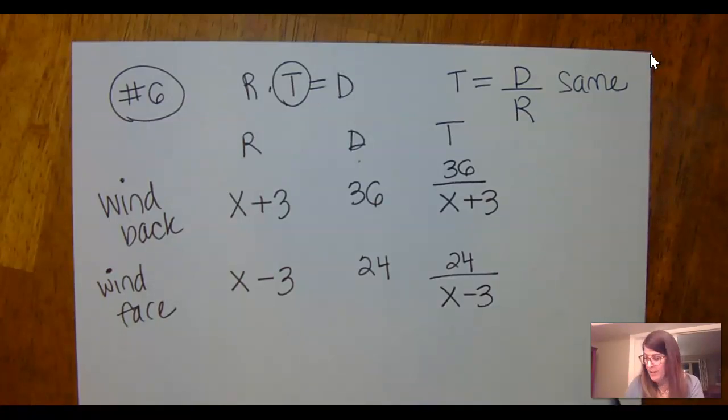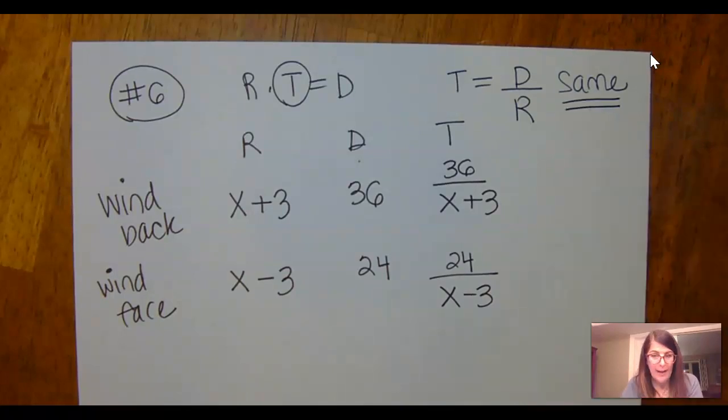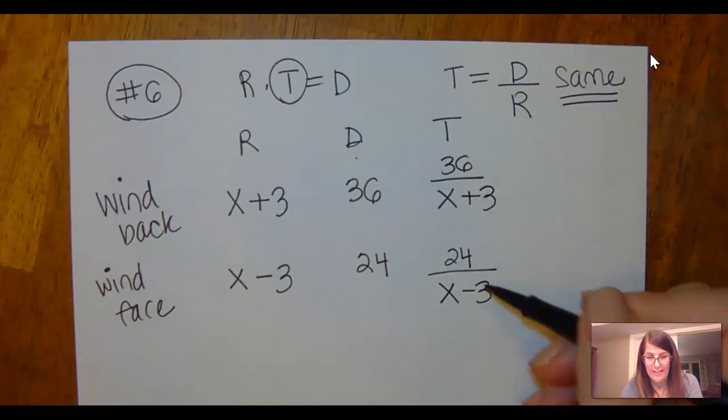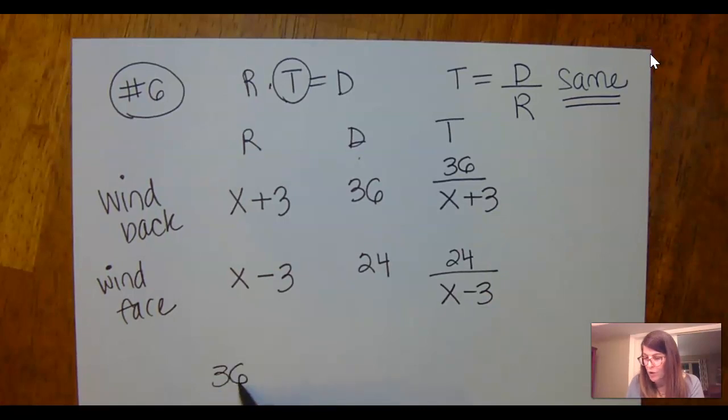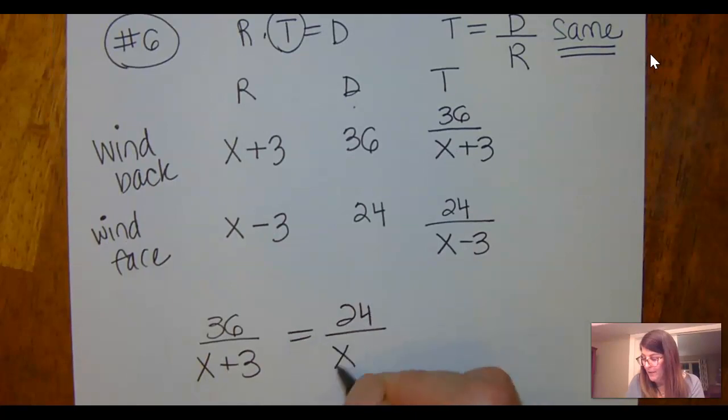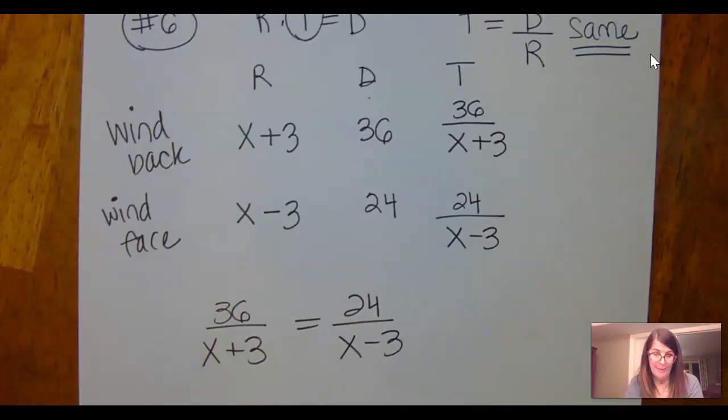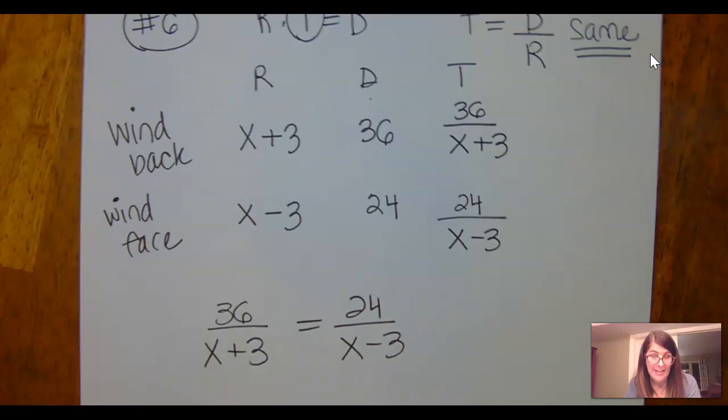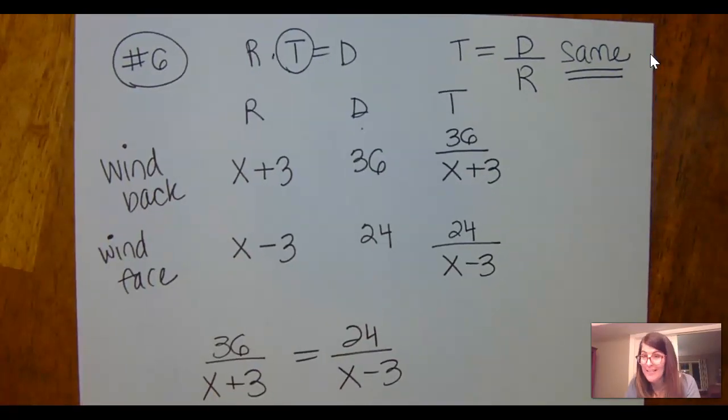So the question is, what's his rate if these different distances take the same amount of time? I would set this up by saying 36 over x plus 3 equals 24 divided by x minus 3. So now you'll be able to solve that a little bit easier if you needed this help.